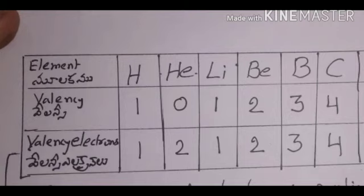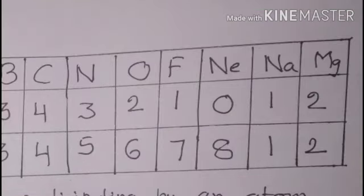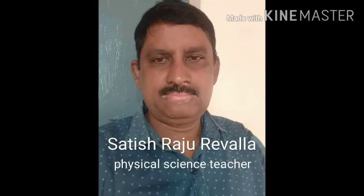And from nitrogen to neon, valency and valency electrons are not equal. So we can conclude that valency and valency electrons are not equal in all cases. Thank you and note these points.